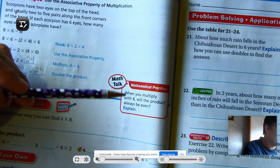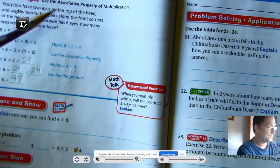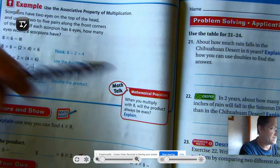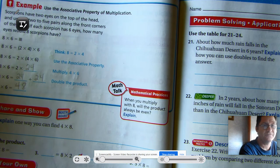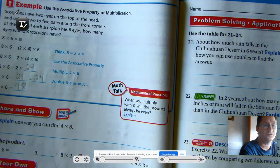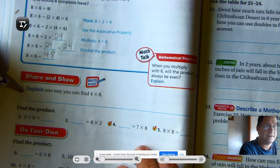Over here it says, when you multiply with eight, will the product always be even? Yes, because if we think of it as the associative property, and we multiply by two and four, those are both even numbers, four is just doubled two, so the product has to be even.